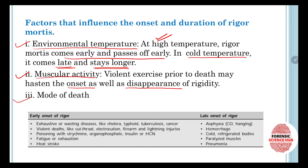Another factor is the mode of death. Rigor mortis can come early or late depending upon how the death occurred. Early onset of rigor mortis occurs in cases where death has occurred due to exhaustive or wasting diseases like cholera, typhoid, tuberculosis, and cancer.